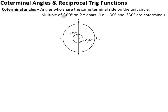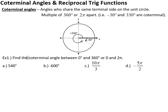So how do you find a co-terminal angle? Because we want to end in the same place, we need to go 360 degrees from where we are, or 2π radians from where we are. So we can just keep adding or subtracting 360 over and over again, or the same with 2π. Find the co-terminal angle between 0 and 360 — it's giving me a specific range. Remember we said there could be infinitely many, but in this range there should just be one, or 0 to 2π if we're talking about radians.